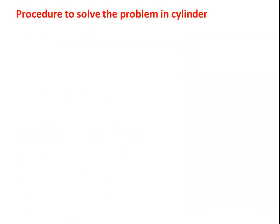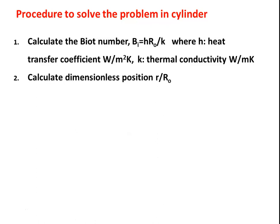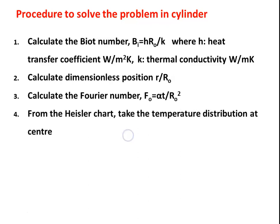To solve the problem, we use the standard procedure. Analytical solutions are available, but at undergraduate level we solve problems using the Heisler and Grober charts. The first step is to calculate the Biot number: for a cylinder, Bi = H·R₀/K, where H is the heat transfer coefficient and K is the thermal conductivity. Then calculate the dimensionless position r/R₀, where R₀ is the outer radius and r is any given radius. Then calculate the Fourier number: Fo = α·t/R₀². From the Heisler chart, the temperature distribution at the center is (T₀ − T∞)/(Tᵢ − T∞) as a function of Biot number and Fourier number.